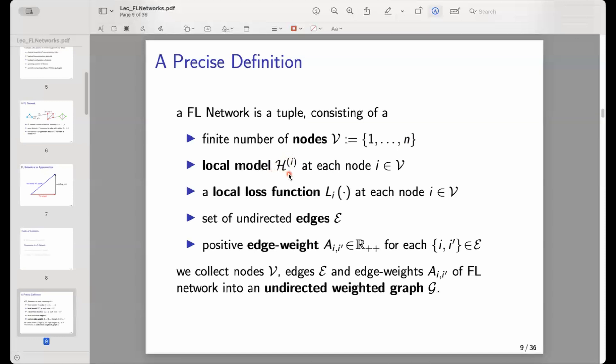The local model at node 1, for example, might be a linear model, and the local model at node 10 might be a decision tree. We will see how we can develop federated learning algorithms that train arbitrary collections of local models.